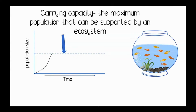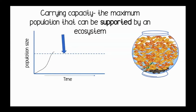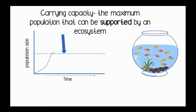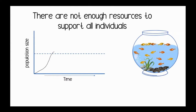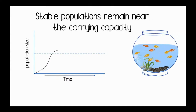The carrying capacity is the maximum population that can be supported by an ecosystem. Notice that we say 'support,' not 'fit' or 'holds.' We could fit a lot of fish in the fishbowl, but we can only support a certain number of individuals. Populations that surpass the carrying capacity cannot be supported — there are not enough resources to support all individuals. Stable populations remain near the carrying capacity.